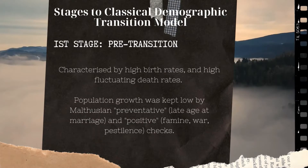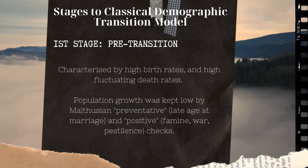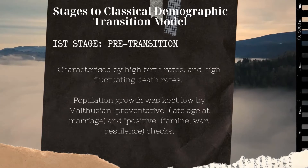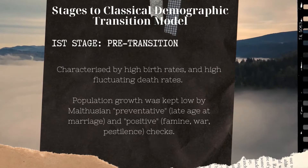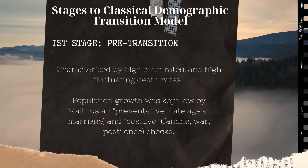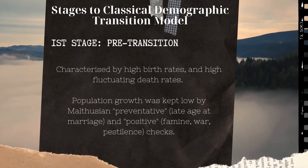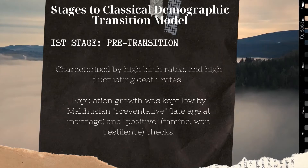The first stage of the classical demographic transition model is called the pre-transition. The country is backward and is characterized by high birth and death rates, with the result that the growth rate of population is low. People mostly live in rural areas, and their main occupation is agriculture-based.